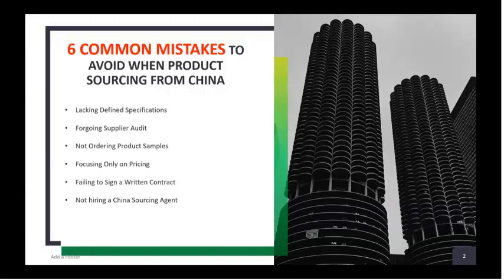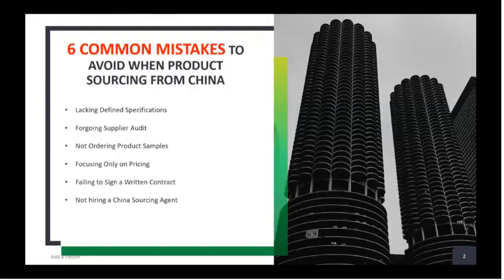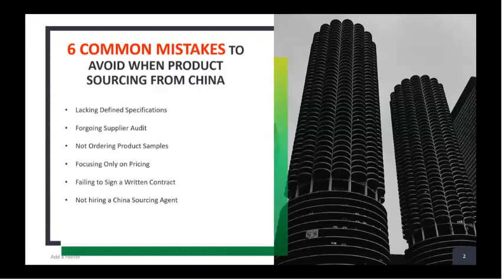The second mistake is foregoing the supplier audit. Foregoing supplier audit means ignoring the verification of the supplier — whether the supplier is verified or not, what process they use, what raw material they use, whether you are dealing with a manufacturer or a trading company. You need to check that you have not skipped the audit. You need to see the manufacturer's competence level and how many units they can make per day.